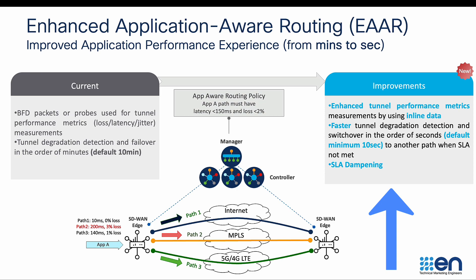With enhanced application aware routing, path performance metrics such as loss, latency, and jitter will be measured using actual inline data packets, thereby giving us faster tunnel degradation detection and switchover time. The default convergence time for soft failures is now in the order of seconds.